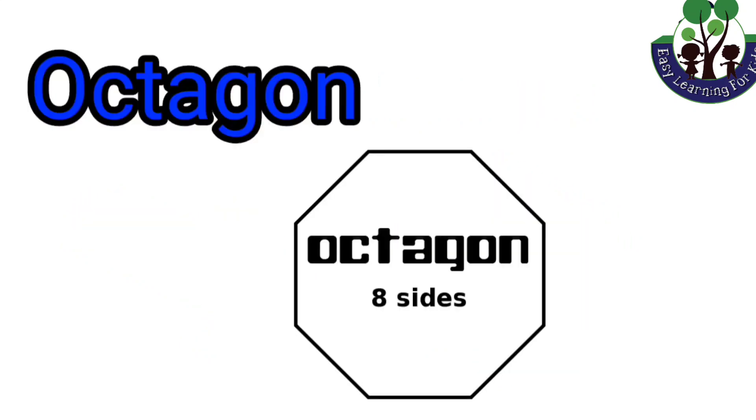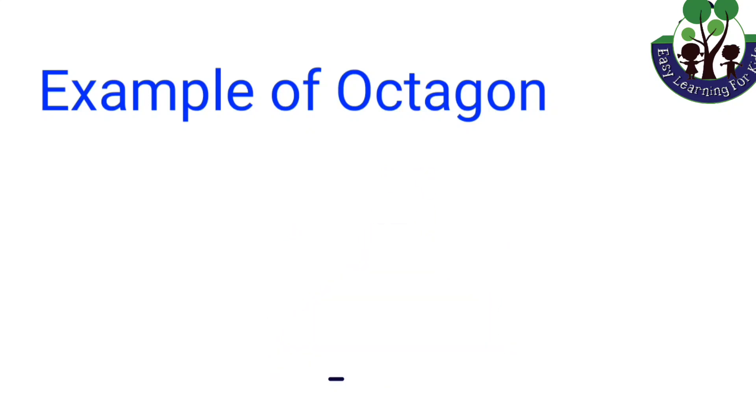Octagon. A shape that has eight straight sides called octagon. For example, stop signboard.